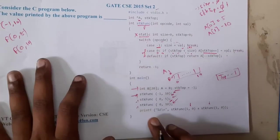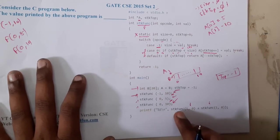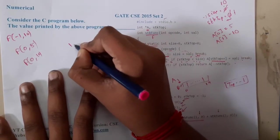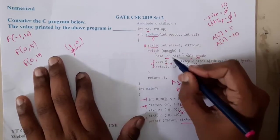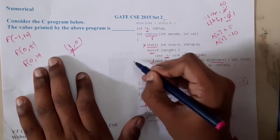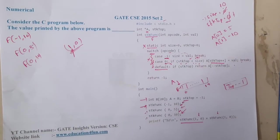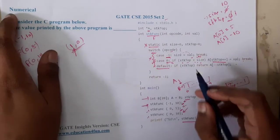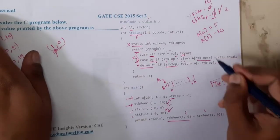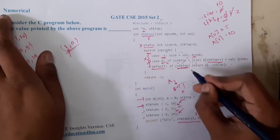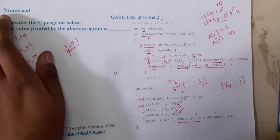Now we have printf("%d", stk_fun(1, 0) + stk_fun(1, 0)). So we call f(1, 0). The opcode is 1, but there is no case 1 in the switch statement. So we fall through to the default case. The default case checks: if stk_top is not equal to 0, it returns a[--stk_top]. The current stk_top is 2, which is not 0, so it executes.